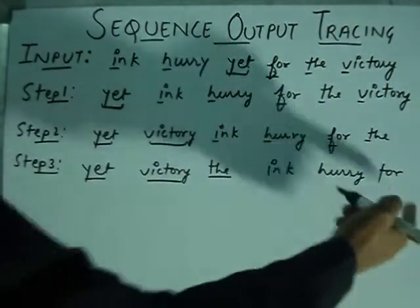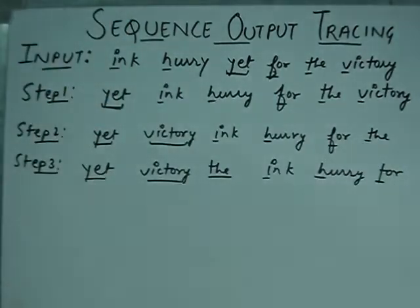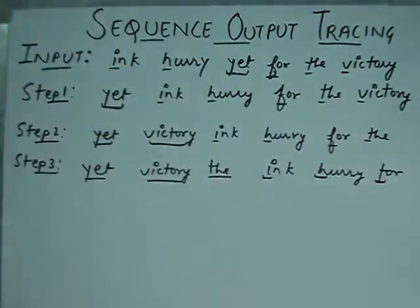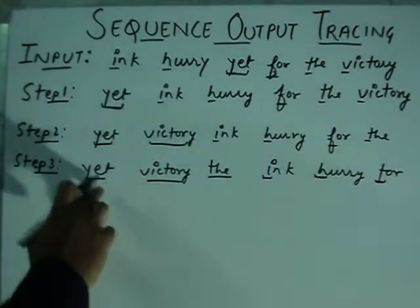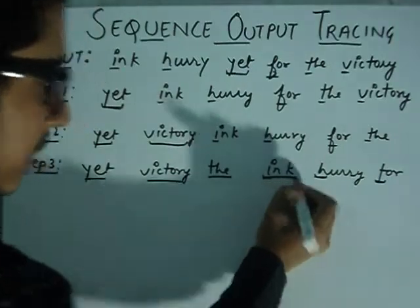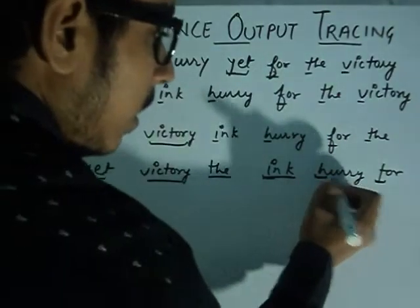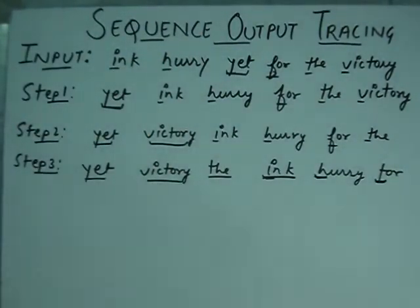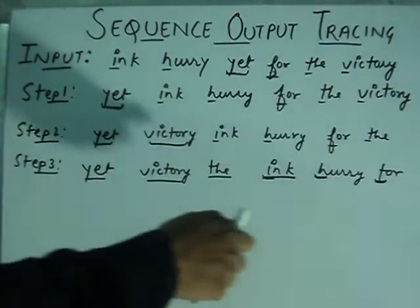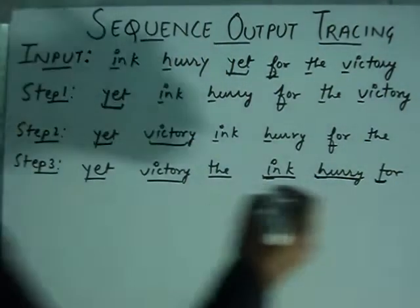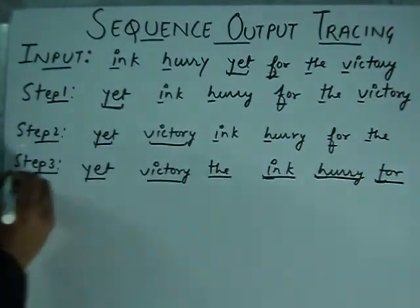Now we have to check the remaining three. Again check the first alphabet. According to alphabetical order, I comes later, so we book that place. In step four, we check the other two. In alphabetical order, H comes later, so it is automatically placed. And after that, we place F here. So this is our final step.